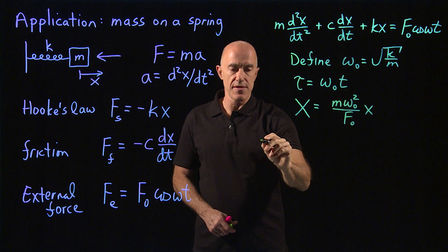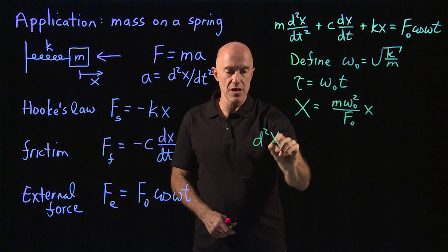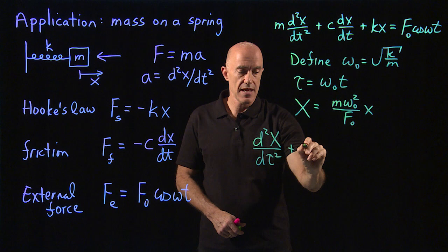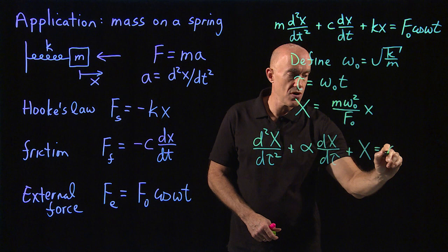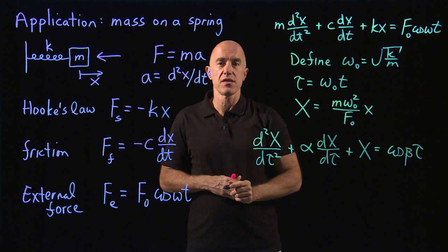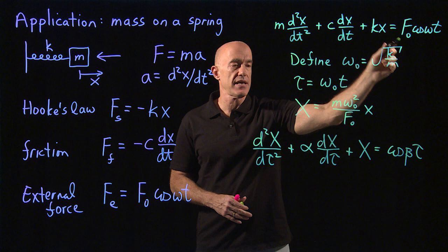When you substitute these dimensionless variables into this equation, you'll end up with d squared capital X d tau squared plus alpha dX capital X d tau plus x equals cosine beta tau, which is exactly the equation we got for the LRC circuit.